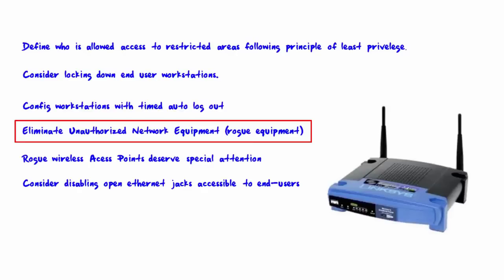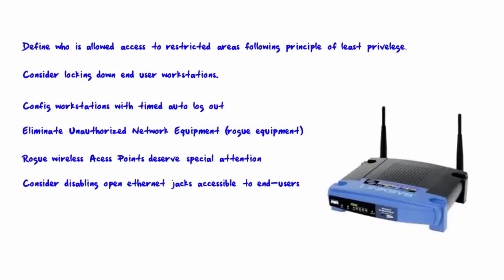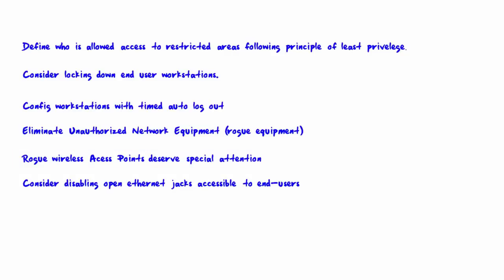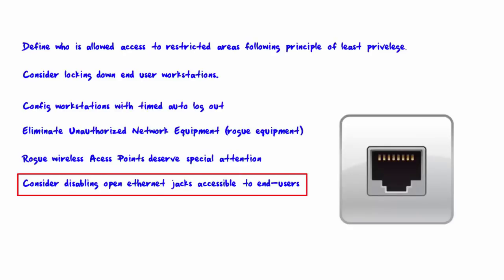In my experience, more technically advanced users seem to pose a bigger problem. Of course, rogue equipment may also be installed by black hats with the sole purpose of doing harm. Rogue wireless access points deserve special attention — this is a very common type of rogue equipment. The most direct way to find them is to use a program like Insider to view all SSIDs in the area, specifically unauthorized ones. Consider also disabling open Ethernet jacks accessible to end users, as most rogue equipment must be plugged into an Ethernet jack. Cisco does allow you to disable ports on switches.